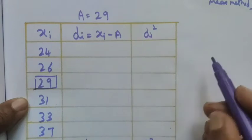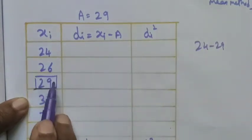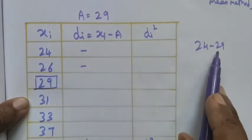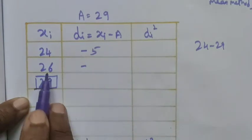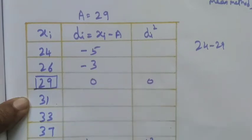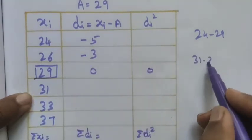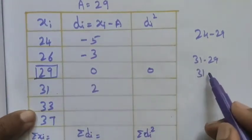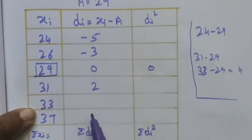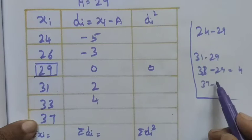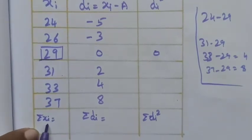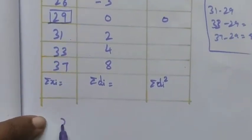Now computing di = xi minus A: 24 minus 29 is minus 5, 26 minus 29 is minus 3, 29 minus 29 is 0, 31 minus 29 is 2, 33 minus 29 is 4, and 37 minus 29 is 8.